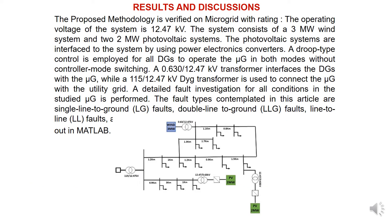Coming to the results and discussions, the proposed methodology is verified on a microgrid with an operating voltage of 12.47 kV. Actually, it is 115 kV which is stepped down to 12.47 kV. The system consists of a 3 MW wind system and 2 MW photovoltaic system. You can see them represented here in green color.